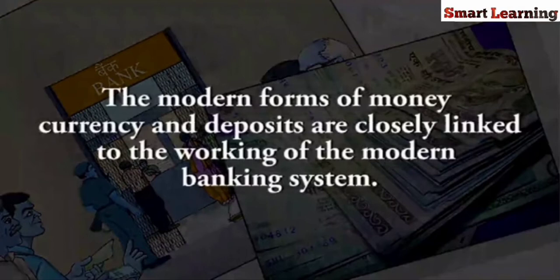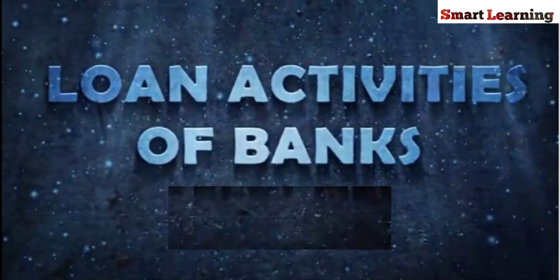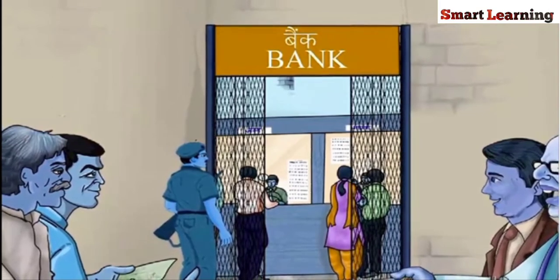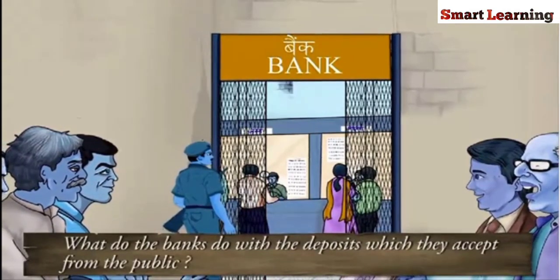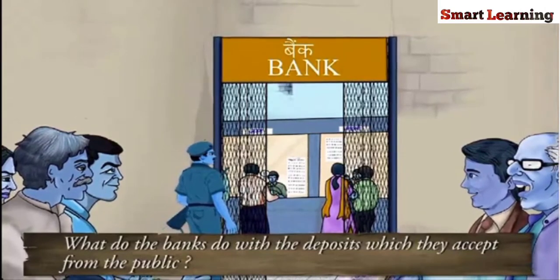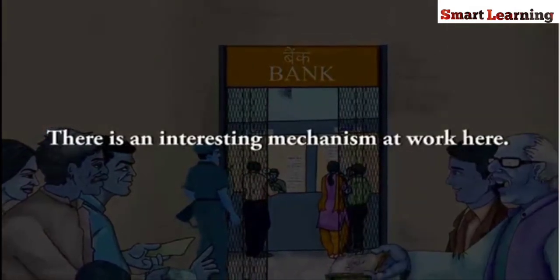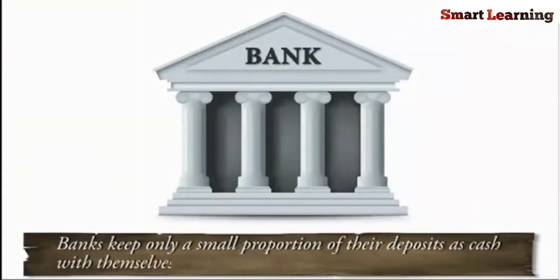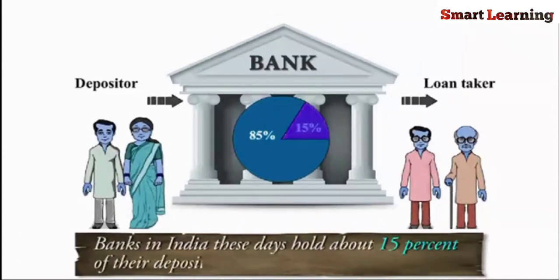The modern forms of money, currency and deposits, are closely linked to the working of the modern banking system. Let us take the story of banks further. What do the banks do with the deposits which they accept from the public? There is an interesting mechanism at work here. Banks keep only a small proportion of their deposits as cash with themselves. For example, banks in India these days hold about 15% of their deposits as cash.